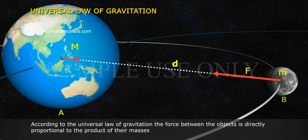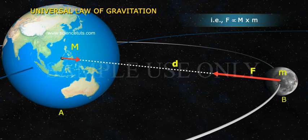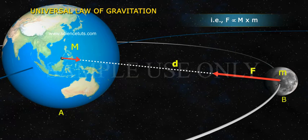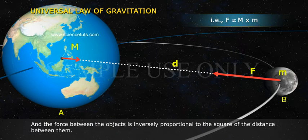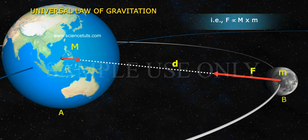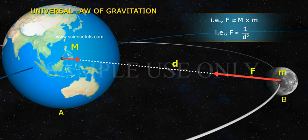According to the Universal Law of Gravitation, the force between the objects is directly proportional to the product of their masses. That is, F is directly proportional to M into m. And the force between the objects is inversely proportional to the square of the distance between them. That is, F is directly proportional to 1 by d square.